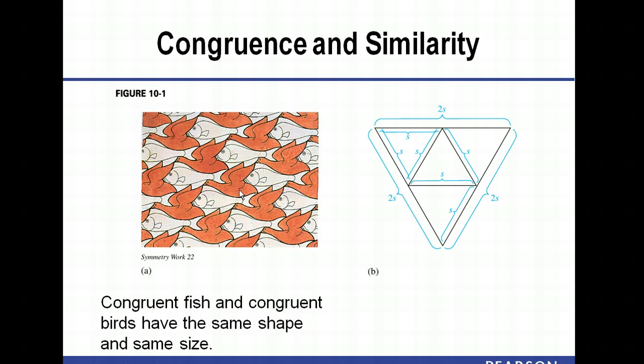Congruent, remember, just means that they have the same shape and the same size. So they're exactly the same. Not just the same shape but also the same size. In a sort of contrasting way over here we see that we have what are called similar triangles. There is this triangle here which is similar to the large triangle here. It's the same shape but it's not necessarily the same size. So this small triangle right here is similar to the large triangle. Same shape, not the same size. Versus congruency which says same shape and same size.